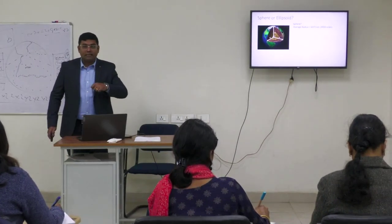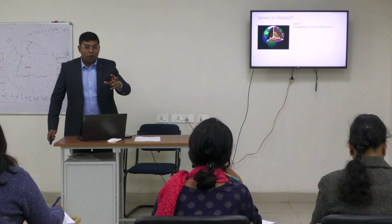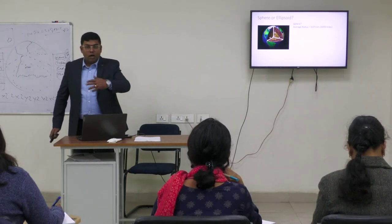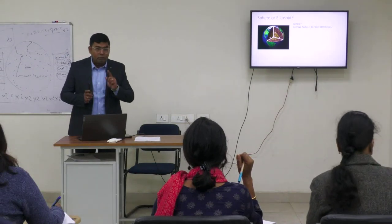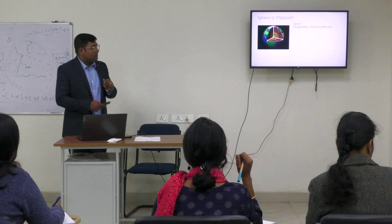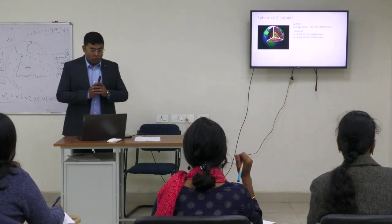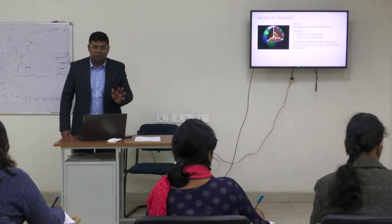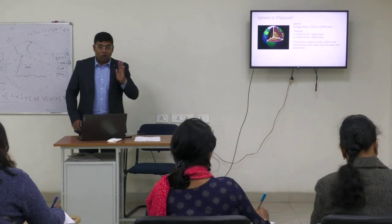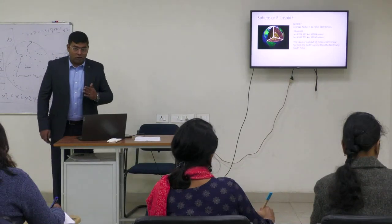But suppose we are interested in mapping some part of Assam — like a university campus or a small hamlet — then the spherical model of the Earth is not going to be useful, because we have to consider the curvature of the Earth. For that, we go with the ellipsoidal model. Here, A is the equatorial radius of 6,378.13 km and B is the polar radius of 6,356.75 km — a difference of almost 21.3 km.